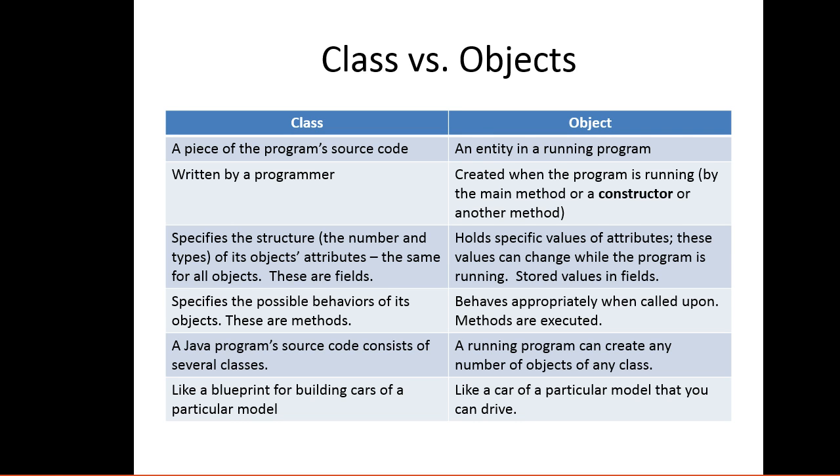A class specifies the structure of the object's attributes, and all objects will have the same attributes - these are thought of as fields. An object holds specific values for the attributes. These values can change while the program is running. They're stored values in fields. A class tells an object what attributes it will have. An object holds the attributes for that specific instance of the class.